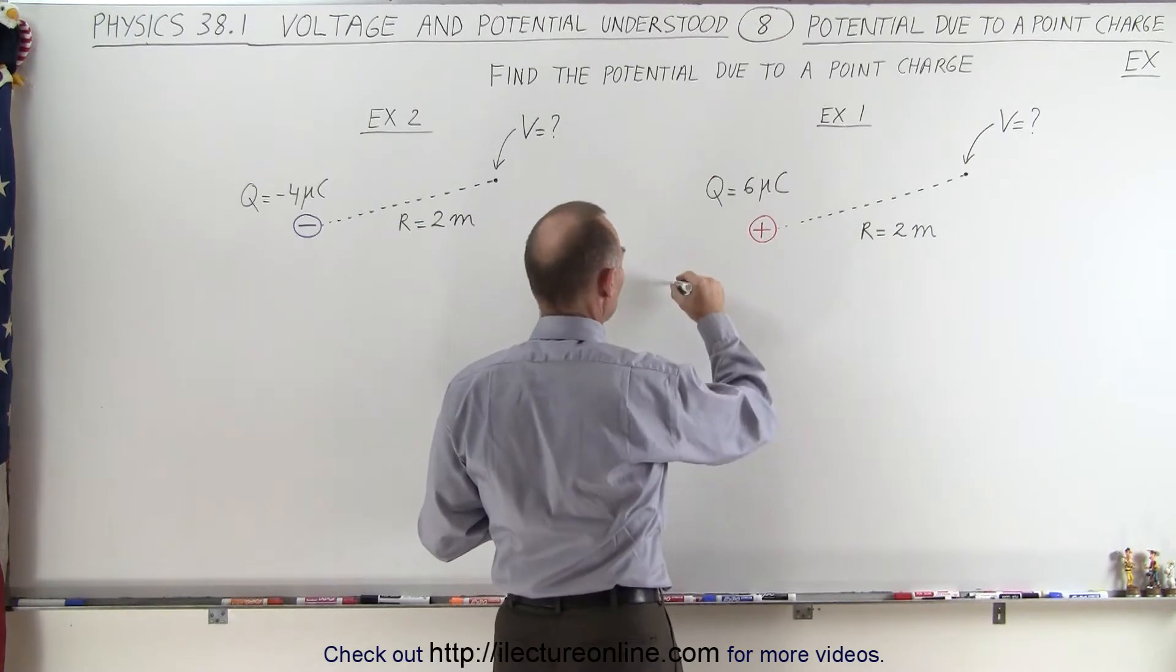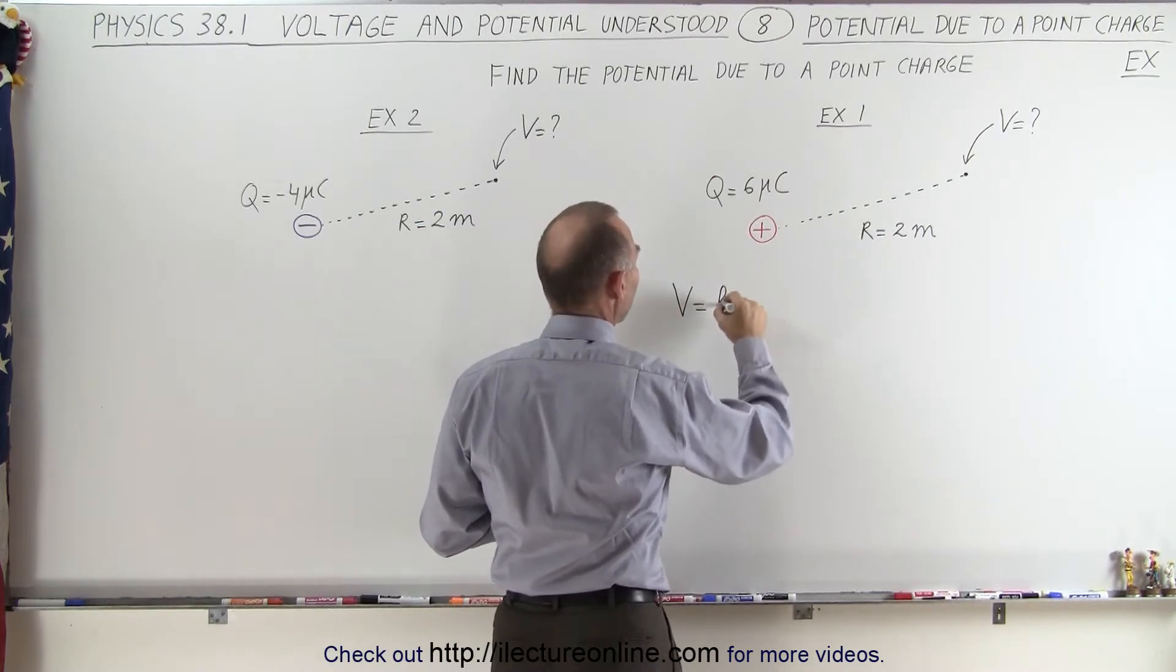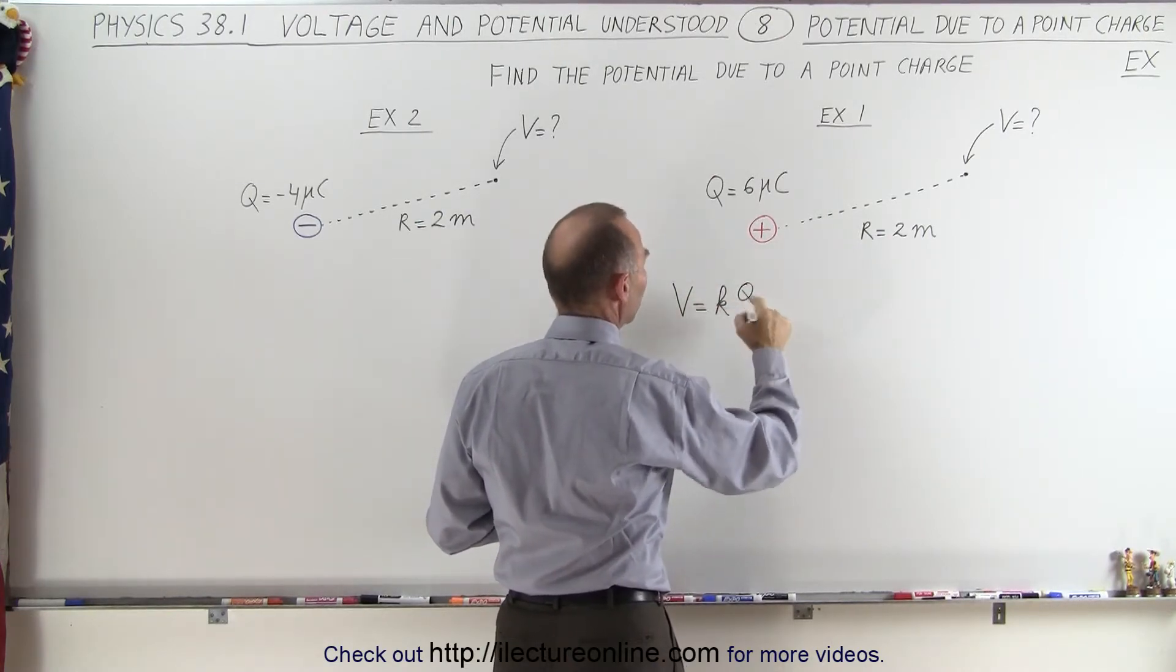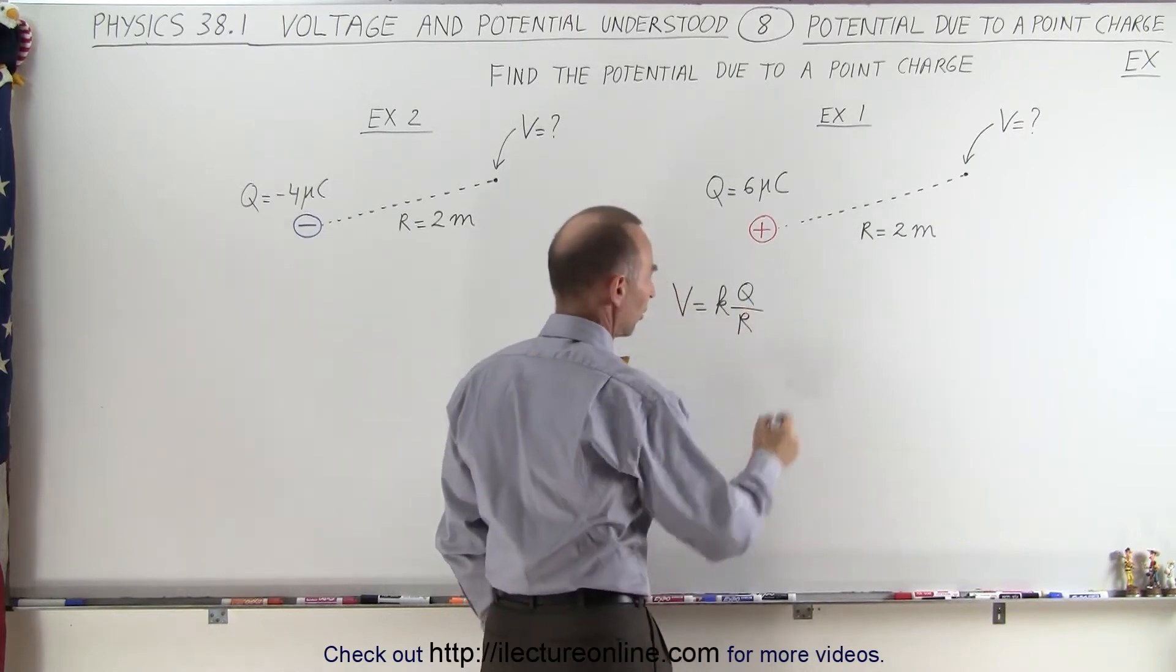So we know that the potential is defined as k times the charge that causes the potential divided by the distance away from that charge.